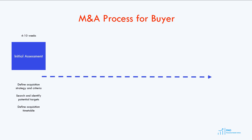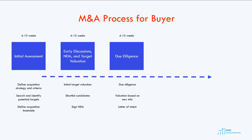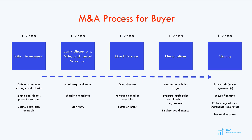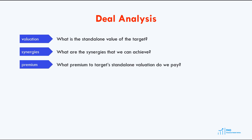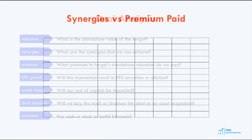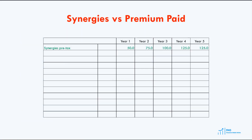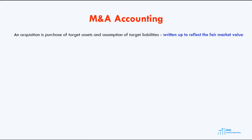The course is divided into three main parts, each covering different aspects of M&A modeling. The first part provides an overview of the M&A process with focus on deal analysis, deal synergies, premium analysis, deal structures, and deal currency. Participants will learn about negotiation and valuation, and gain insights into M&A deal structures and the use of different deal currencies.